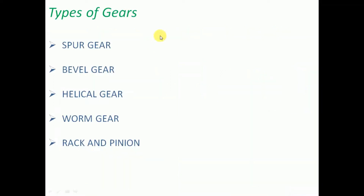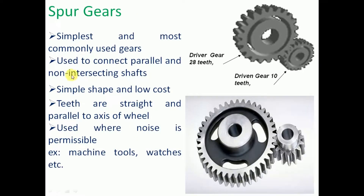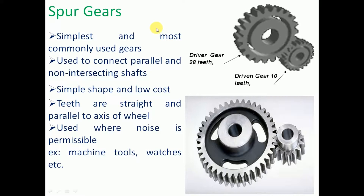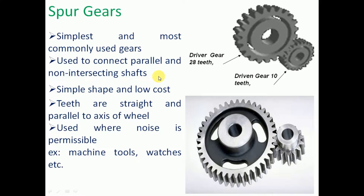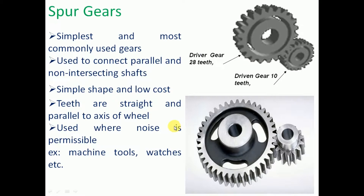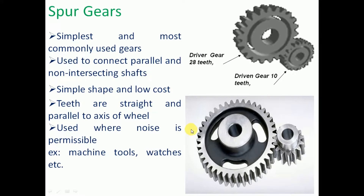There are different types of gears: spur gear, bevel gear, helical gear, worm gear, and rack and pinion. The first type is the spur gear. A spur gear is the simplest and most commonly used gear, used in all types of power transmissions. It connects parallel and non-intersecting shafts. The shape is simple, the cost is less, and the teeth are straight and parallel to the axis of the shaft. These gears produce higher noise during operation.